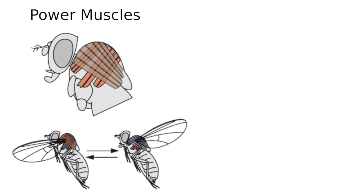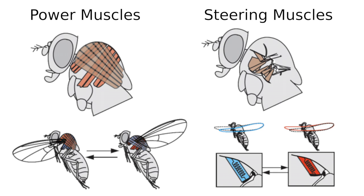Large, stretch-activated muscles that coarsely power the wings back and forth, and a set of 12 tiny, neurally-activated muscles that are responsible for most of the fine-grained control.